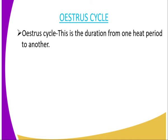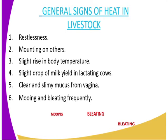Then we have the oestrous cycle. What is the oestrous cycle? This refers to the duration from one heat period to the other. Remember, after mating, the fertilization might not be successful, meaning that after a given duration of time, the heat signs will also be noticed again.